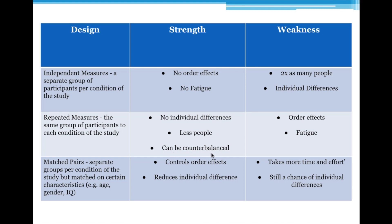Another term here: you can counterbalance the study. One problem with getting everyone to listen to music first and then run without music is that they might get bored or fatigued the second time. For example, if I wanted to test whether students were better at football or rugby, and I got them to play football first and then rugby, they'd be worse at rugby because they'd already played football. So instead, you'd get half the students to play rugby first and then football, and the other half the reverse. That's known as counterbalancing — a way of trying to overcome order effects in a repeated measures design.